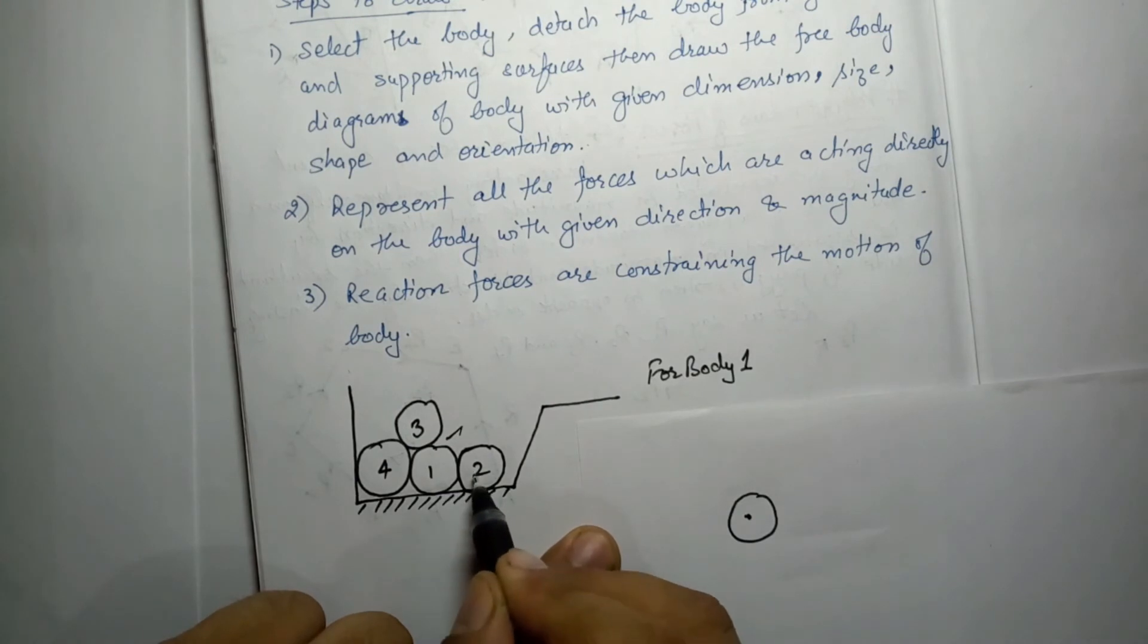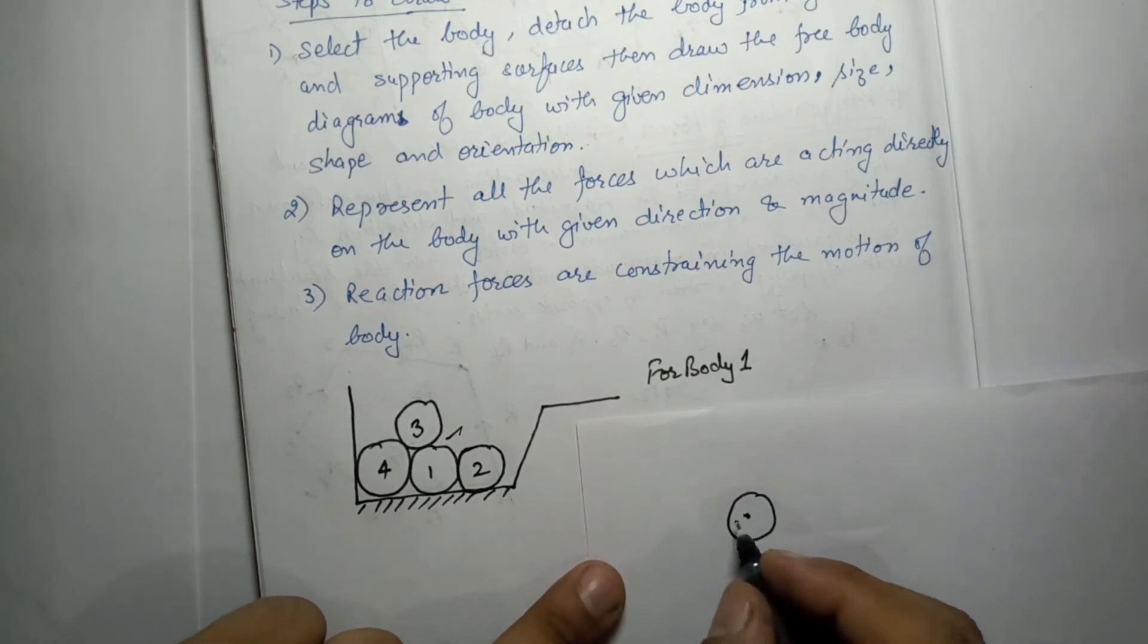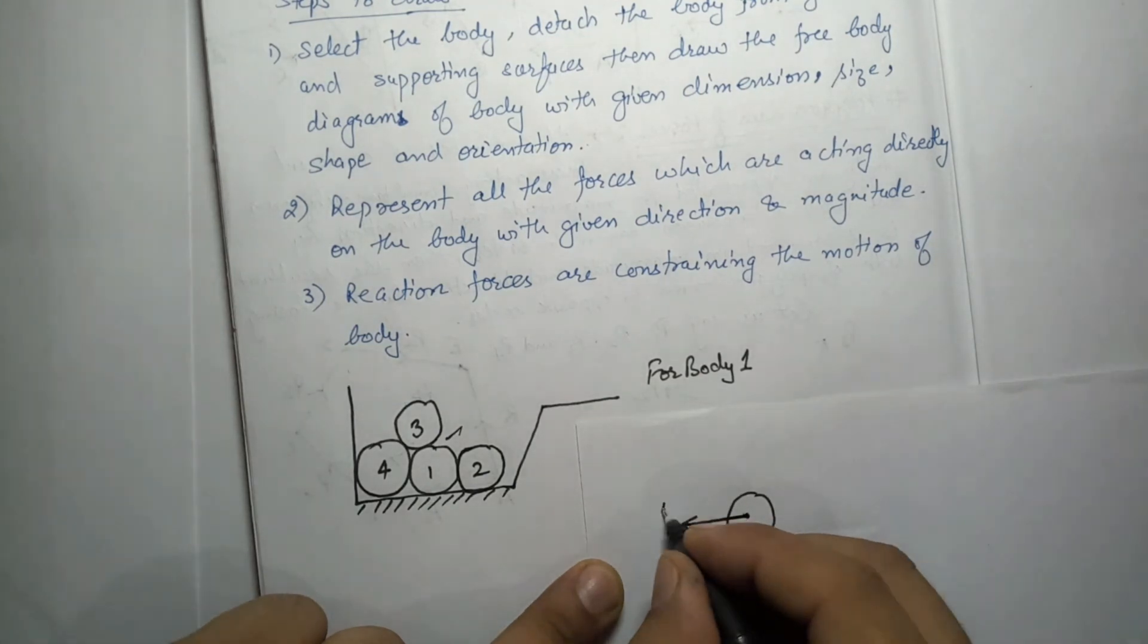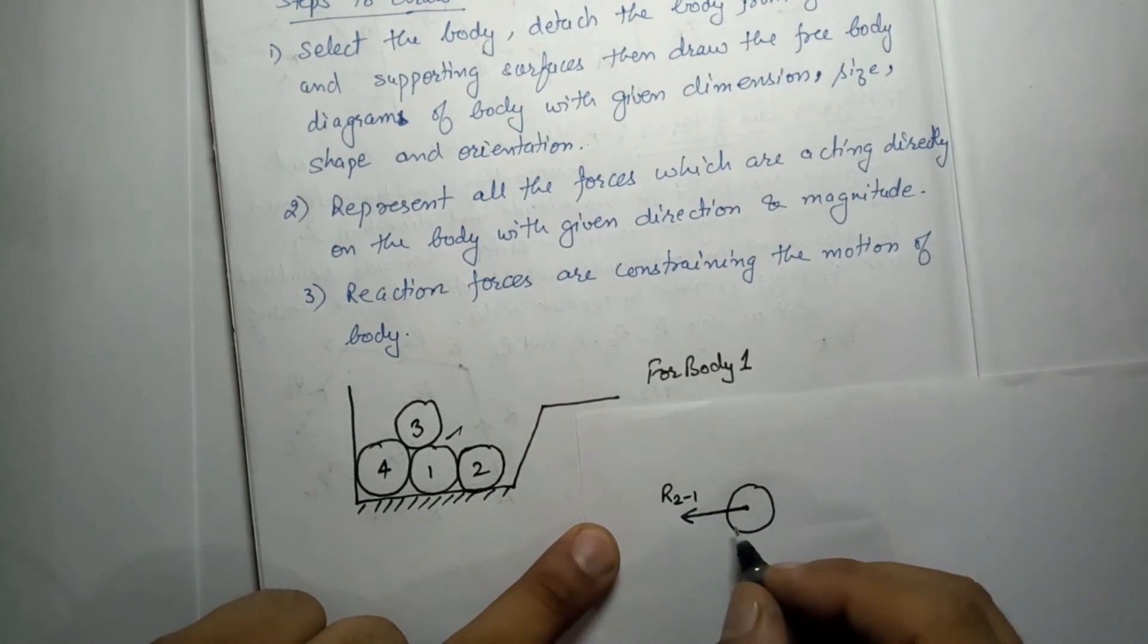Now there is an adjacent body that is 2. Body 2 will apply force on this body. So what will be the direction of that force? We can say this one, and we say this is the force due to 2 on 1. This is how we write: this is the force due to body 2 on 1, and the direction is there.